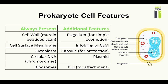Let's look at the prokaryotic cell features. For your exam, I would just recommend remembering this column. The number one hint that it's a prokaryotic cell is if the cell wall is made up of murein, which is a peptidoglycan compound. If it has these features — cell wall, cell surface membrane, cytoplasm, circular DNA, and ribosomes — then it could possibly be a prokaryotic cell. Additional features are flagellum, infimding, a capsule for protection, plasmid, and pili for attachment. Pili are extensions bacteria use to attach to another cell. For your exam, remember this table, but more specifically, remember these points.